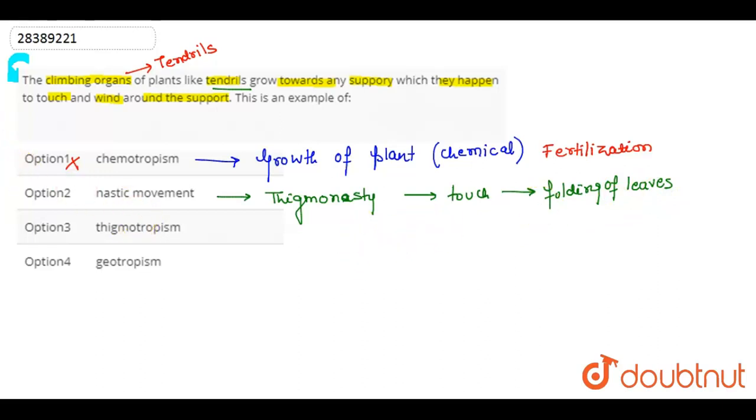The third option is Thigmotropism, which is the growth of plant in response to touch. Because we have here, we have the example of tendrils.